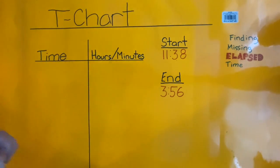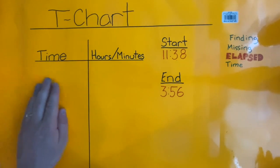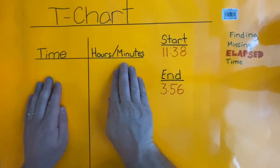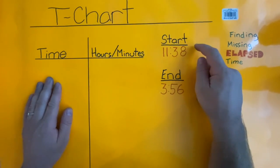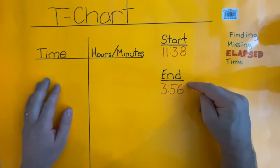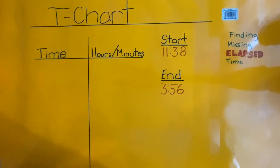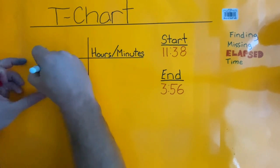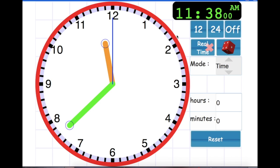As you can see, I now have my t-chart drawn out. The times are going to be listed on this side, and the hours and minutes will show our elapsed time over here. I also have my start time labeled as well as my end time. We're going to start with the start time over here, so we'll put 11:38 over here. This is what 11:38 AM looks like on our analog clock and on our digital clock.